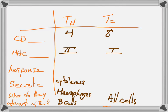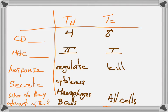T cytotoxic — the C stands for cytotoxic — and that gives us an idea of what it does: kill infected cells. The response of T cytotoxic cells is to kill. They do so by secreting two different proteins: perforin, and granzyme. We'll talk about each of these today.